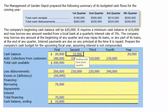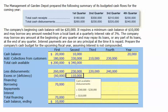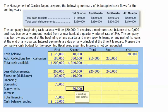Since we have cash collections of $330,000 in the second quarter, our total cash available is $340,000. With disbursements of $230,000, we're left with $110,000 in cash on hand, which means we can pay back the money we borrowed. We'll repay $70,000 in debt.